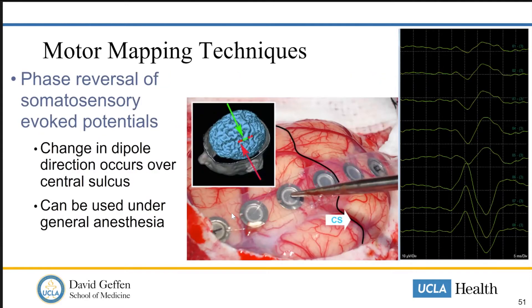Starting from the top, the phase reversal technique is basically when we are applying a sort of grid or strip of electrodes to the surface of the brain in the region that we think is across the central sulcus. A change in the dipole of the current occurs over the central sulcus. We're looking on the monitor to find where that phase reversal occurs, and that occurs over the central sulcus, which identifies it quite reliably in a way that just looking at the brain or looking at an MRI is subject to error.